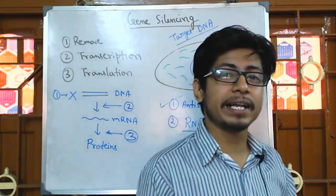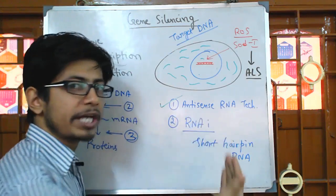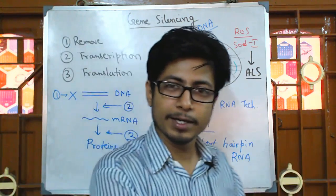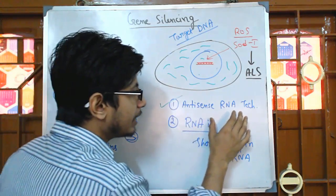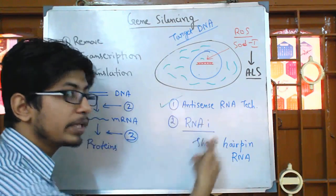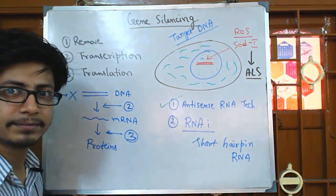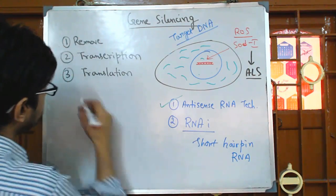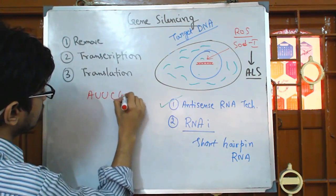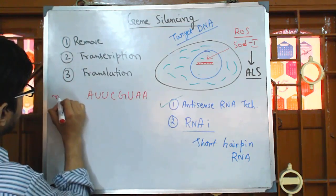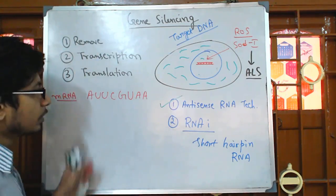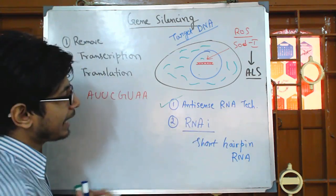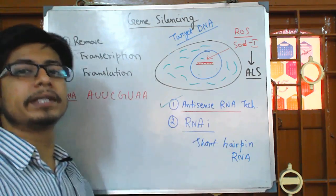What is antisense RNA? Antisense RNA is a complementary RNA strand of the mRNA. A DNA produces mRNA by transcription, and we can design a segment of RNA having sequence complementarity against that mRNA. For example, if the mRNA sequence is C-G-U-A-A, we can design the antisense RNA to be complementary to that target sequence.